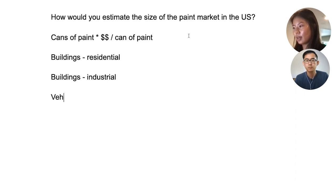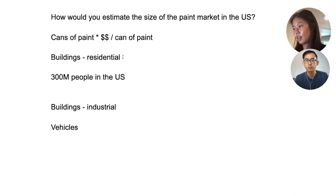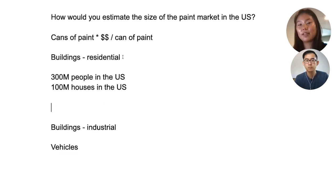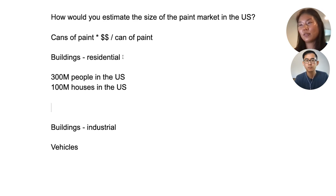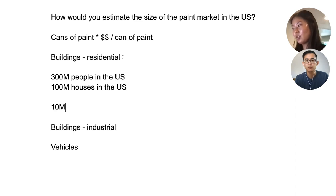Starting with residential: we know there are about 300 million people in the US, and given about three people per household, let's say there are about 100 million houses in the US. Not every single house is going to need paint every single year. Over the course of a house's lifetime, painting is not really a regular thing — you hope you do it nicely one time and it lasts a good amount of time. So let's say you paint a house every 10 years, which gives us 10 million houses per year needing paint.